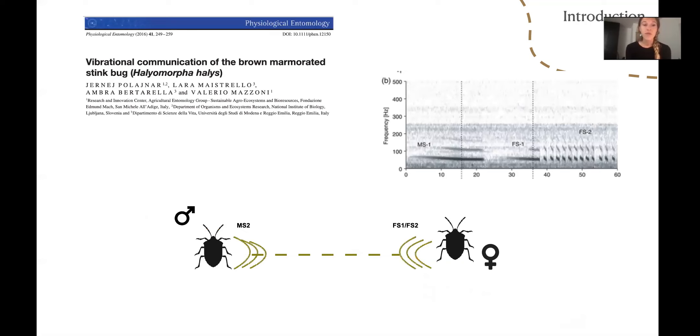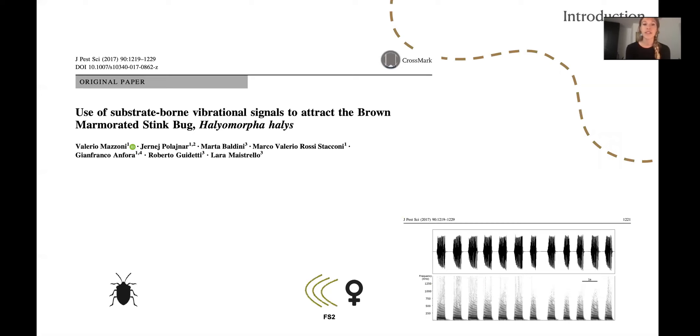In 2016, researchers described the vibrational signals of these species, including some of the people that are today watching this presentation. In particular, males emit a low frequency signal called MS2, to which females reply with two types of signals, FS1 and FS2. In 2017, researchers demonstrated that males of BMSB can be attracted to an artificial source point by a playback of the female signal FS2 in a plant or in an artificial arena.